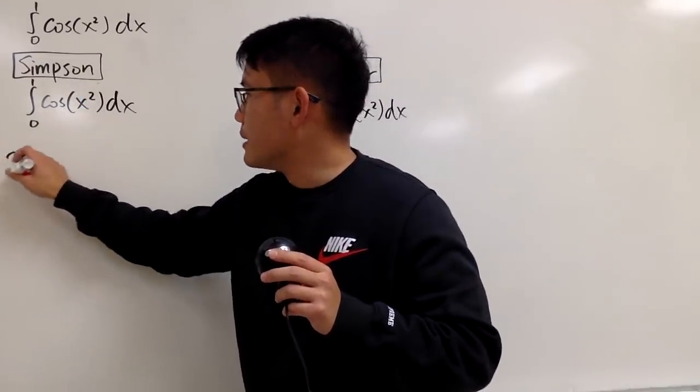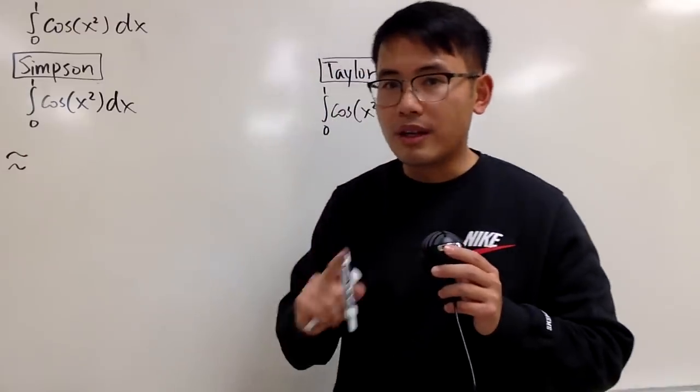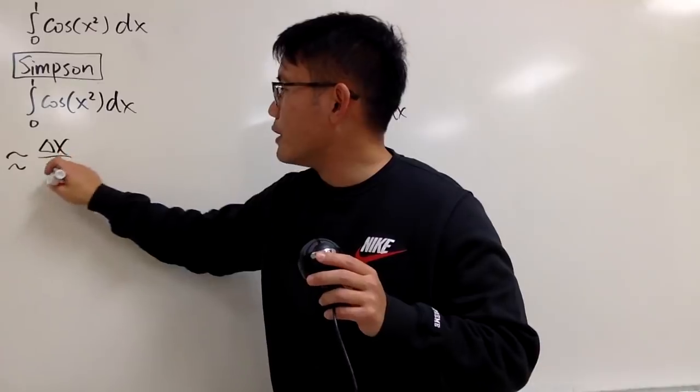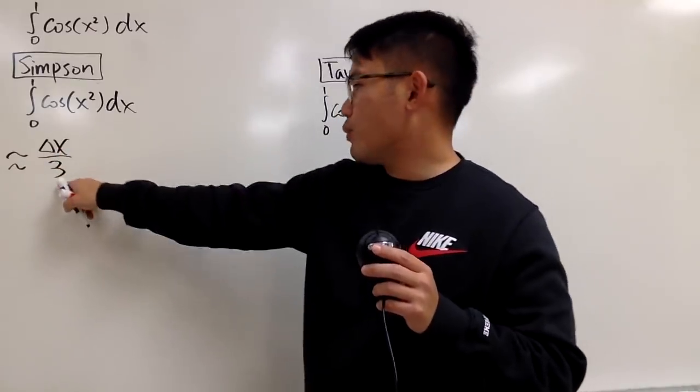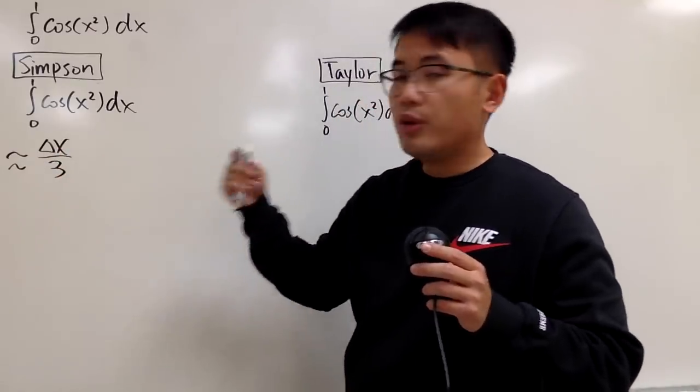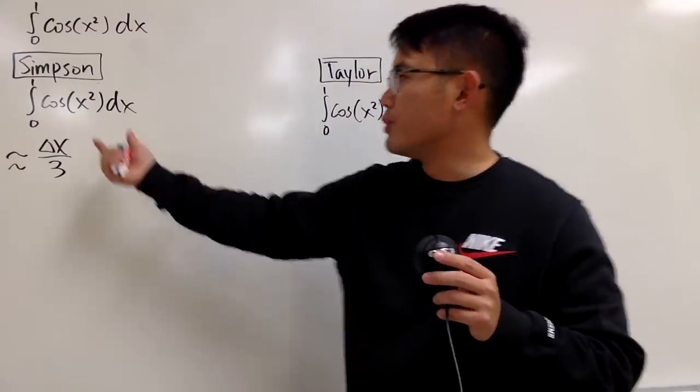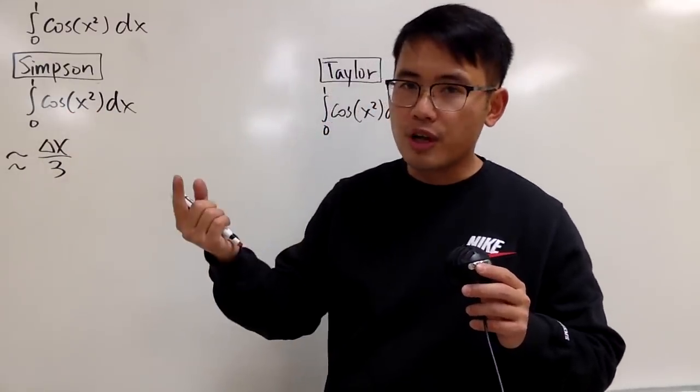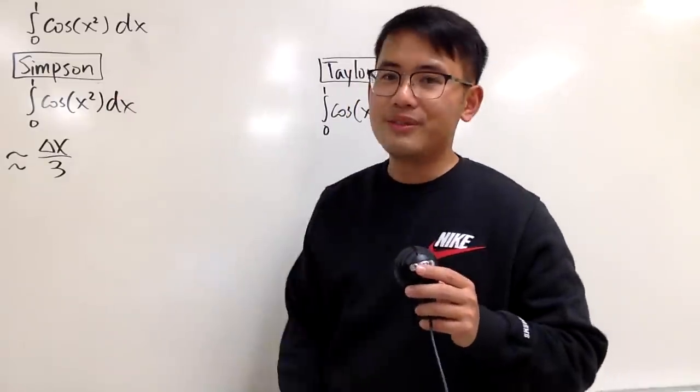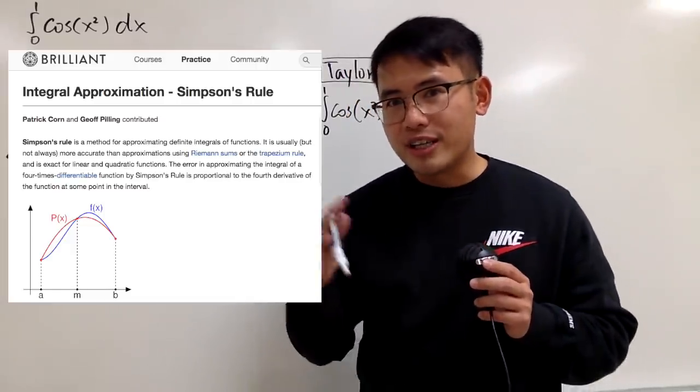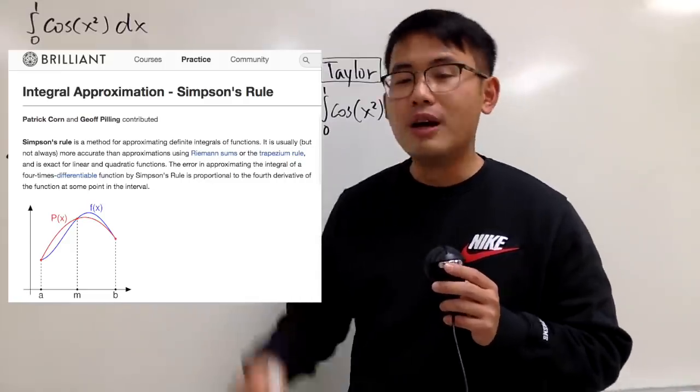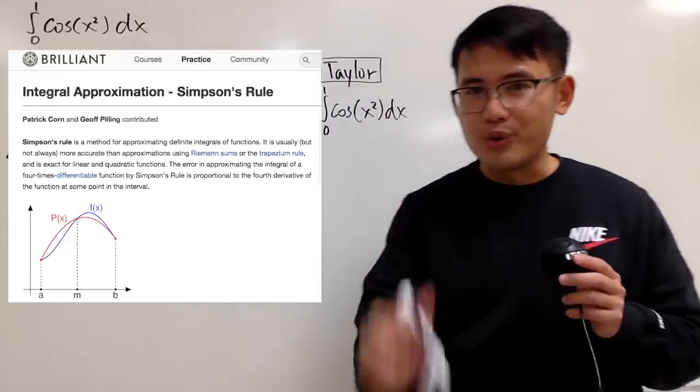This integral is approximately, by Simpson's Rule, I will write down the formula for you first. We have delta x over 3. Why over 3? You can imagine you're using parabolas to do approximation. When you integrate parabola and you have the x squared term, you get the over 3. Be sure you check out brilliant.org because they have detailed explanations on Simpson's Rule.